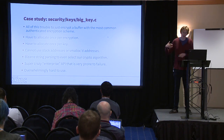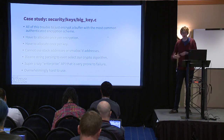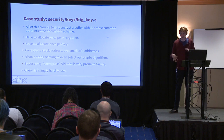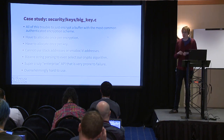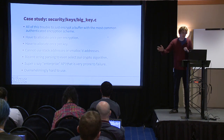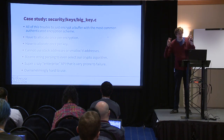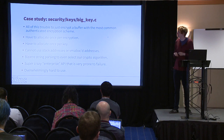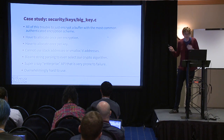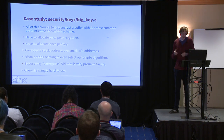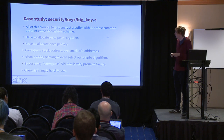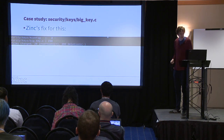All this trouble just to encrypt a buffer with the most common authenticated encryption scheme. We have to allocate once per encryption and once per key, we can't use stack or vmalloc addresses, there's crazy string parsing to specify which cipher you want - pointing toward infinite dangerous algorithm agility. It's a really crazy enterprise API prone to failure and misuse. For Zinc, I ported bigkey.c and removed 206 lines while adding only 28.